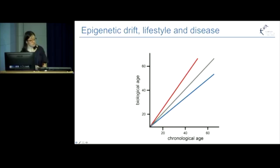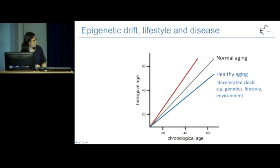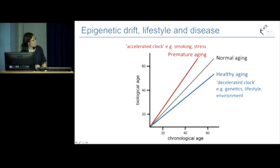This has led researchers to build a model of epigenetic drift, lifestyle, and disease. In the center we have what we call normal aging, where the biological age ticks by at the same rate as the chronological age. We can also get healthy aging — perhaps due to genetics, lifestyle, or environment — where the biological age is ticking by slower than the chronological age, leading to a decelerated clock. You could also have premature or unhealthy aging, perhaps caused by smoking or stress, where the biological age is ticking by faster than the chronological age, leading to an accelerated clock.